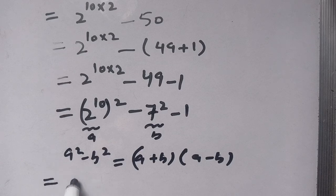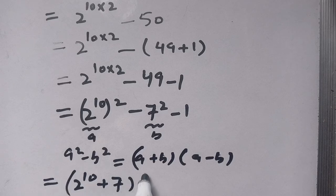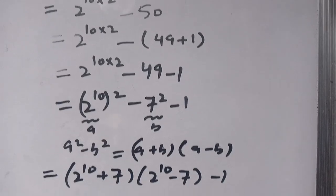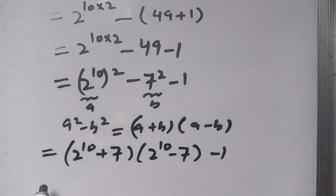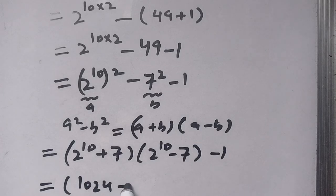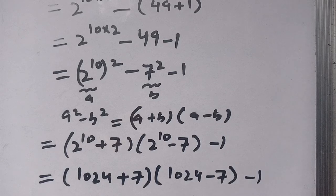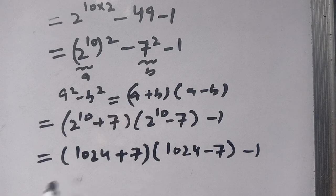Applying the identity, we get (2^10 plus 7) times (2^10 minus 7), and then minus 1. We know that 2 power 10 equals 1024, so this becomes (1024 plus 7) times (1024 minus 7), and minus 1.